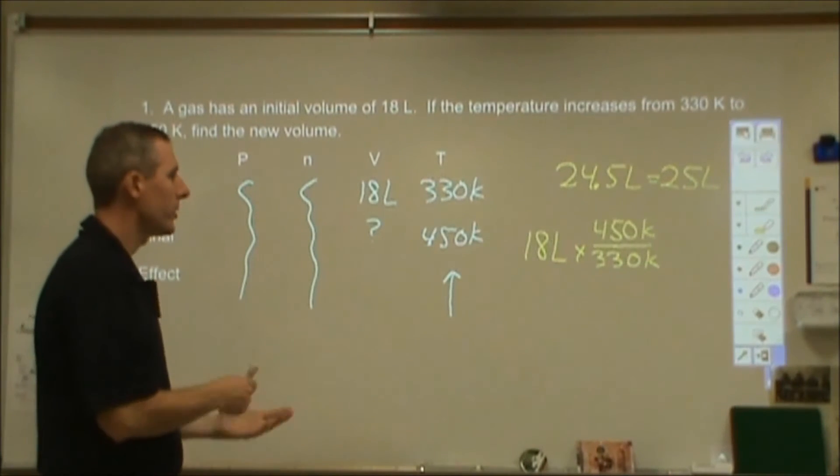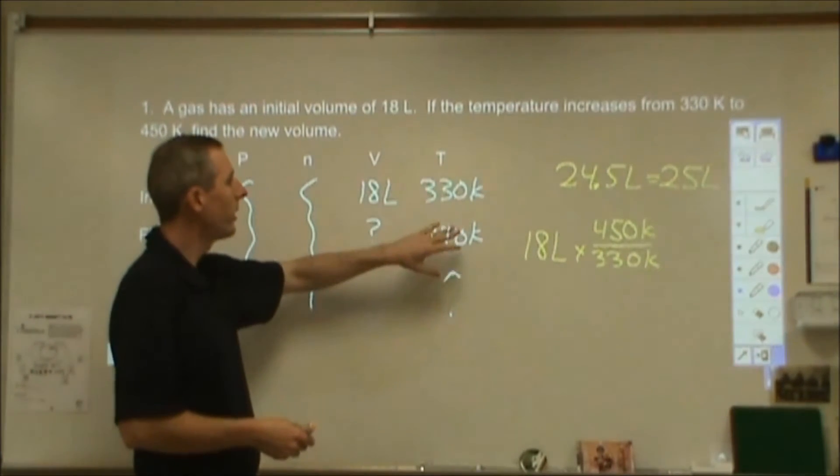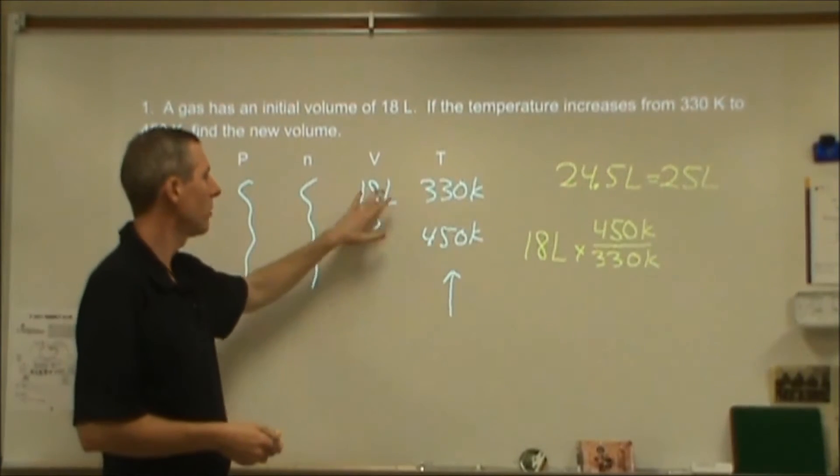So since it's going to go up, you just have to put the greater number on top and multiply by this particular ratio of the two amounts. If I take 18 liters times 450 over 330, this is the proportionality constant that this is going to increase by. All I need to do is analyze whether or not this is going to be 450 over 330 or 330 over 450. Since it's volume, increasing the temperature will make this number get bigger.